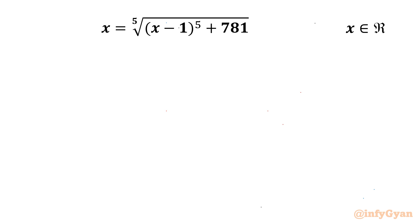Welcome back to Infigyan, my dear friends. In this video we have another very interesting question from Radical Equations. Here we are going to solve for the real values of x, where the equation is x equal to the fifth root of (x minus 1) whole power 5, plus 781. So let us get started with our substitution straight away.